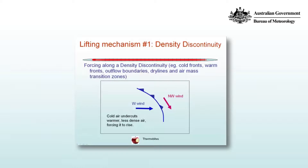The first type is forcing along a density discontinuity — where one air mass undercuts another and forces it to rise. For example, a cold front. Cold air undercuts warmer, less dense air, and often this warmer air contains more moisture, so the virtual temperature is larger. There's a contribution to the density difference not only in terms of temperature but also in terms of moisture.